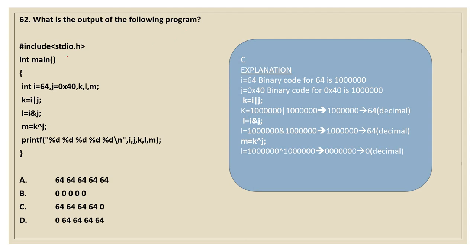Moving on to the 62nd question. What is the output of the following program? hash include stdio.h, int main. int i equals 64, j equals hexadecimal 0x40, and variables k, l, m. We are going to perform some operations and print the values. For performing AND, OR, and XOR operations, we first convert numbers to binary. For 64, the binary equivalent is 1000000. For 0x40, which is the hexadecimal equivalent of the decimal number 64, if you convert to binary, that is going to be the same — 1000000.